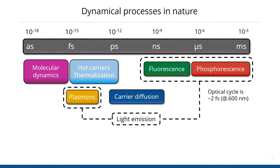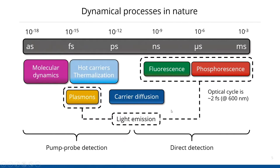Plasmons, fluorescence, and phosphorescence directly correspond to light emission, so that's something you can measure. Fluorescence and phosphorescence also have strong links to other material properties such as carrier diffusion. Typically, there are two ways to detect these processes. You can directly detect the dynamics with ultrafast detectors, but the time resolution of those detectors is limited — you can go to sub-nanosecond resolutions, but not much further. Beyond that, people typically resort to pump-probe detection schemes, which I will come back to later.